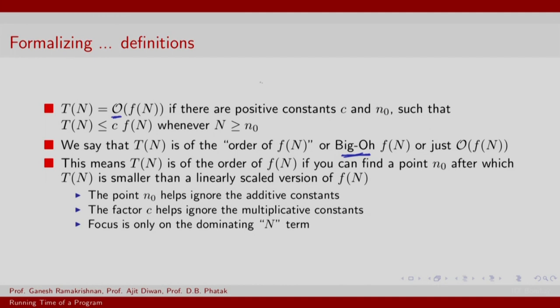That means, well, you might have had T(N) exceeding a particular function f(N) for some point of time, but if you are guaranteed that beyond a value of N, T(N) is consistently less than f(N), then you would say that T(N) is big O f(N). So this is being stated in some words: you can find a point N naught after which T(N) is smaller than the linearly scaled version of f(N). So we have allowed some scaling factor C. So it is possible that T(N), if not scaled well, or f(N) not scaled well, might have T(N) going above f(N), but we are allowed to suitably scale f(N).